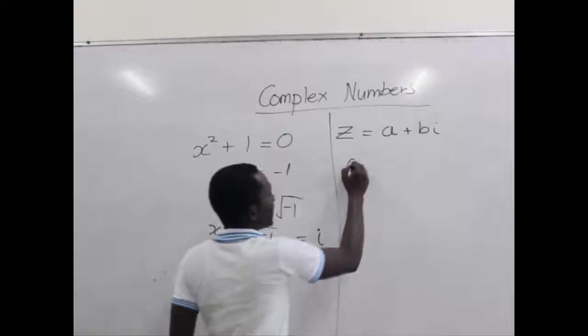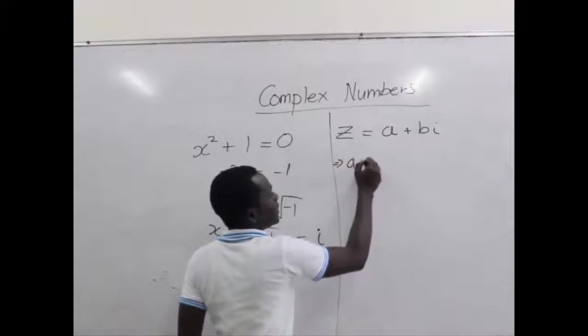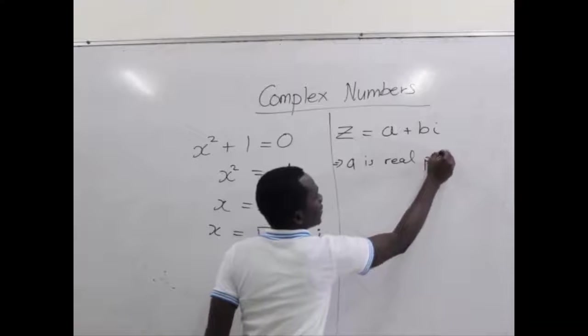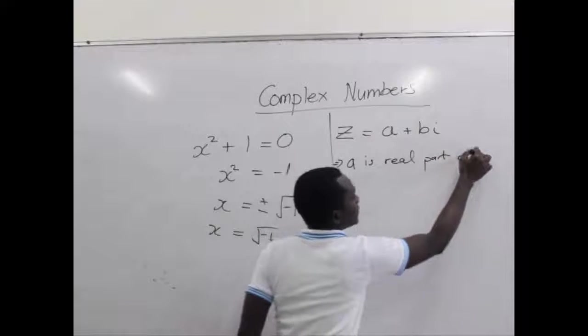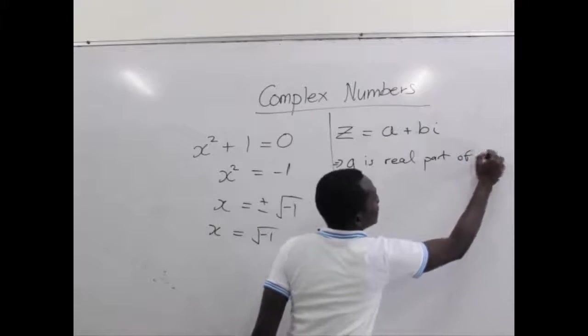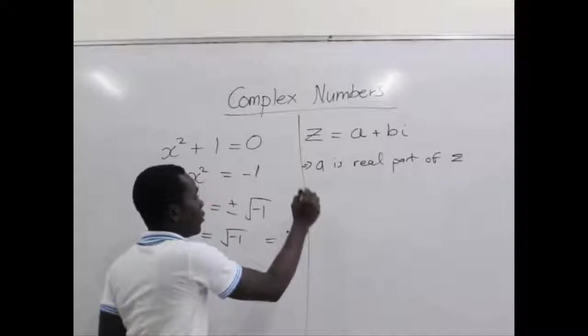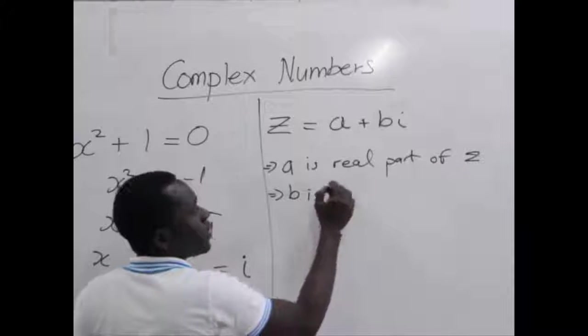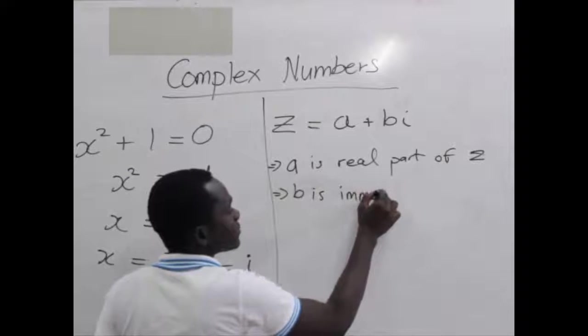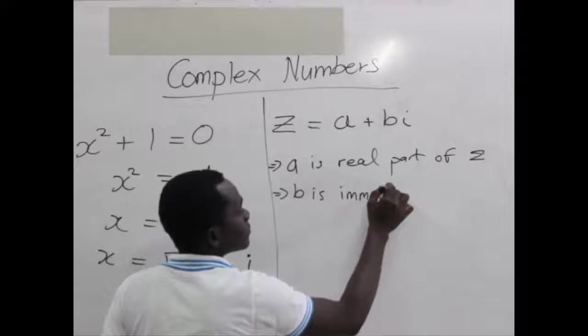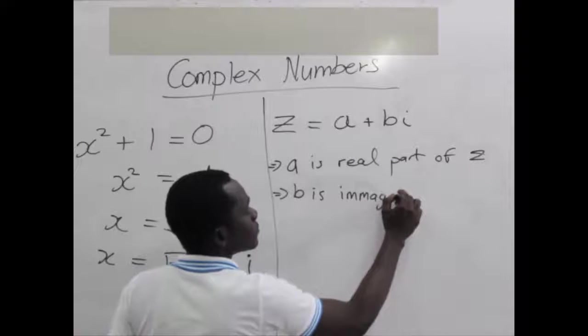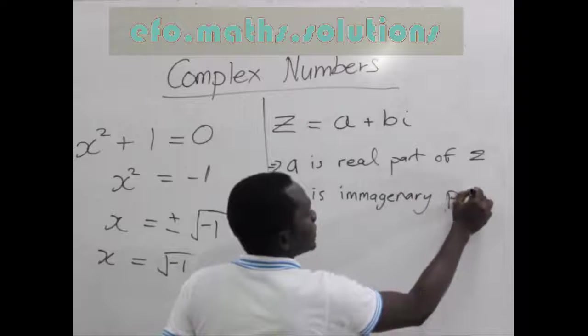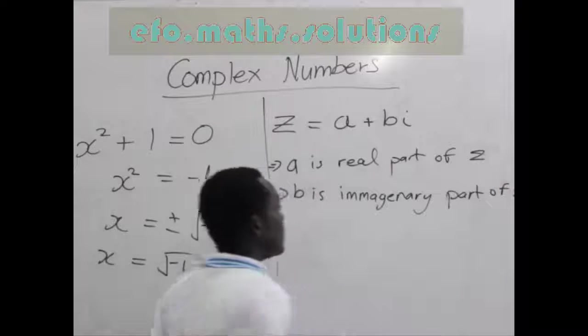We say the part a is called the real part of the complex number z, and also the b is the imaginary part of z.